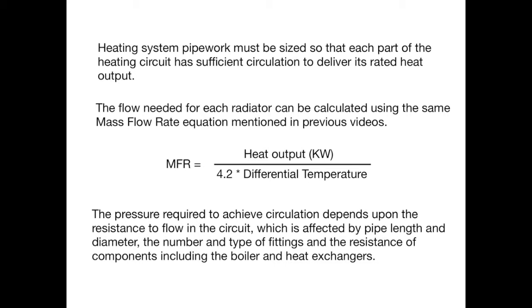In a previous video we looked at the equation of mass flow rate, where we determined the domestic hot water flow rate in terms of its heat output in kilowatts and its differential temperature. The same mass flow rate calculation used on domestic hot water may be used on the heating too — we can determine the mass flow rate through each radiator connected to a heating circuit using exactly the same technique.